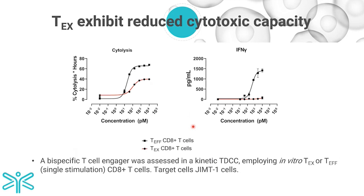To demonstrate targeted killing, we employed a bispecific T-cell engager against HER2 expressed by the cancer cell line SKOV3. We used the area under the curve for each concentration of the bispecific T-cell engager to generate 4PL curves estimating Emax and EC50. The exhausted T-cells clearly showed reduced capacity to induce target cell cytolysis and cytokine production compared to effector T-cells when the T-cell engager was employed.